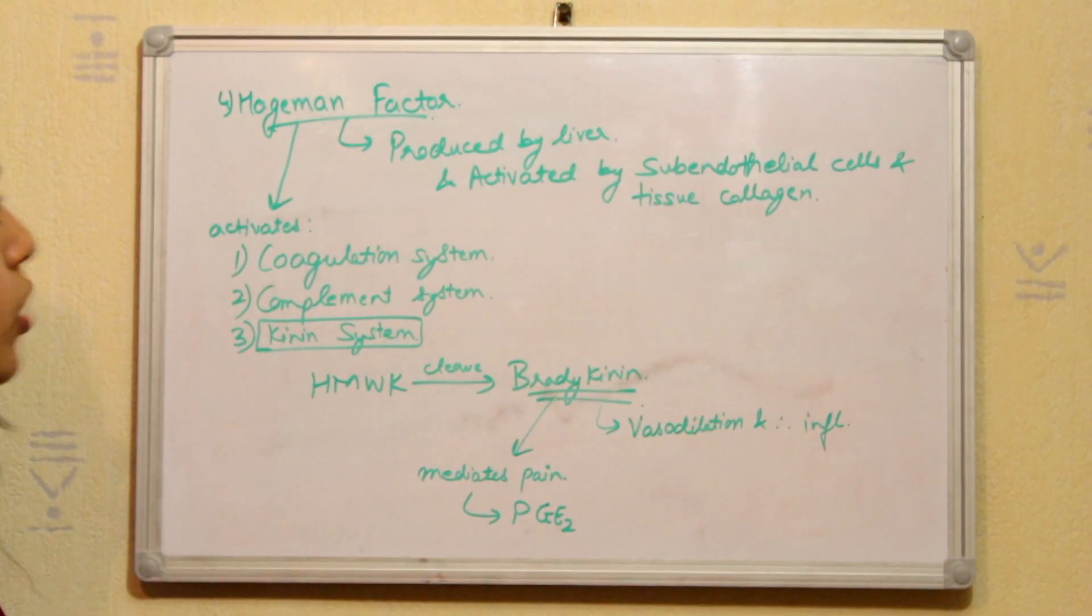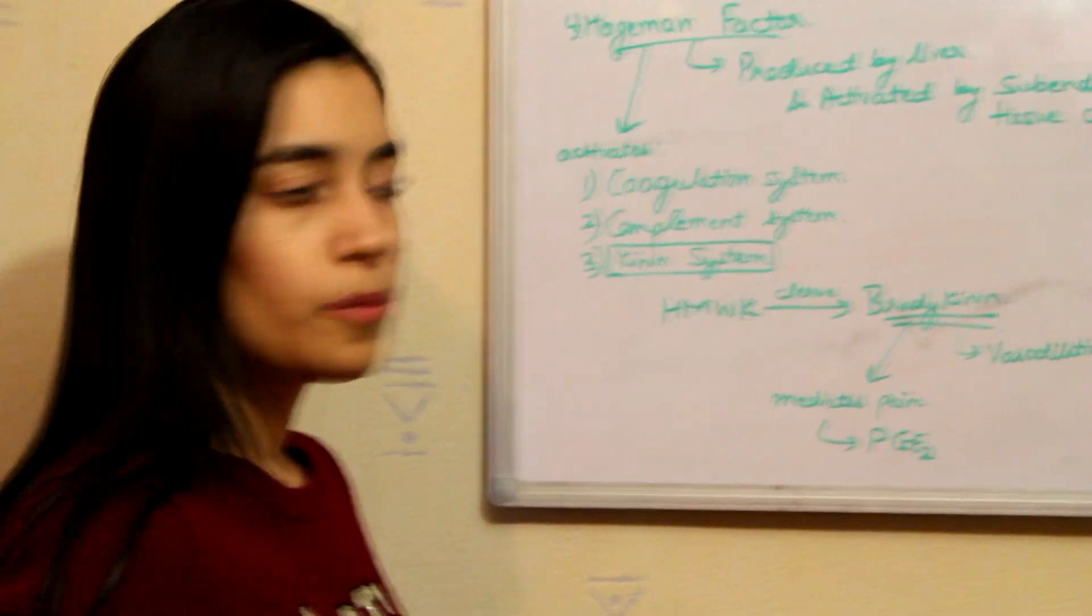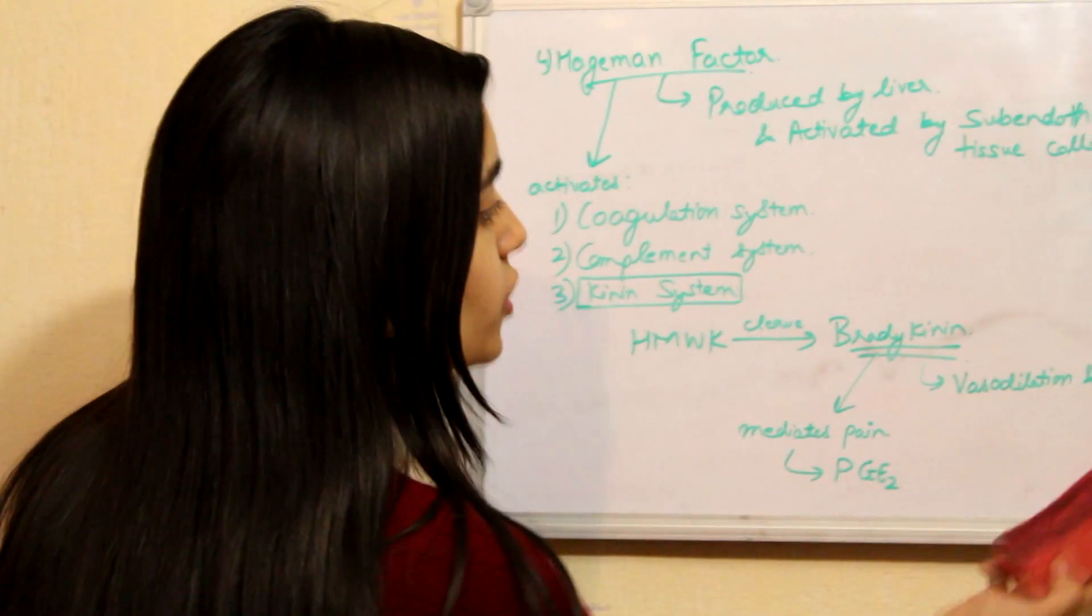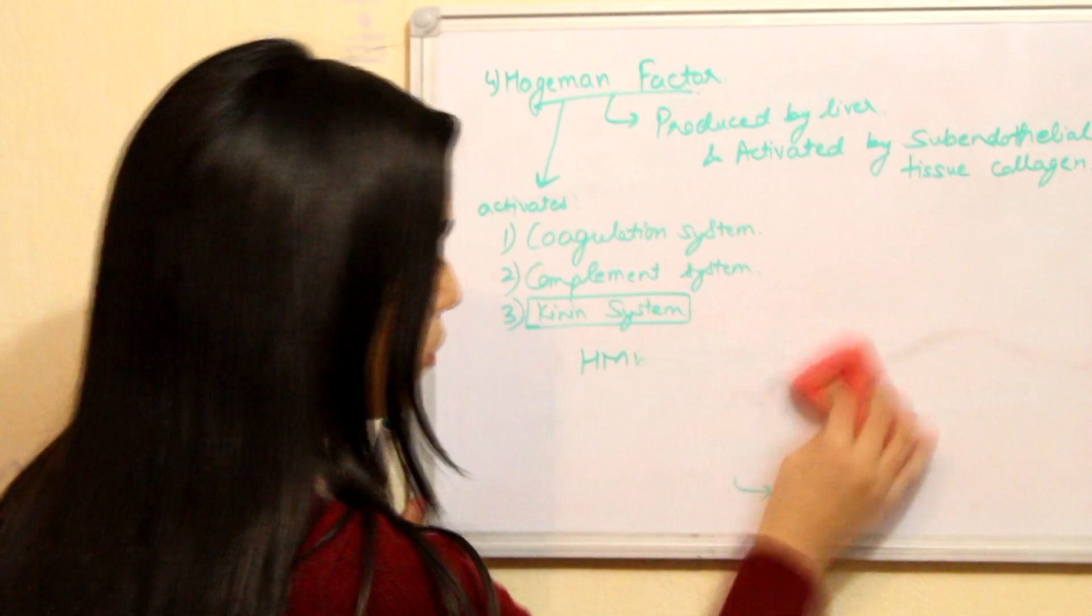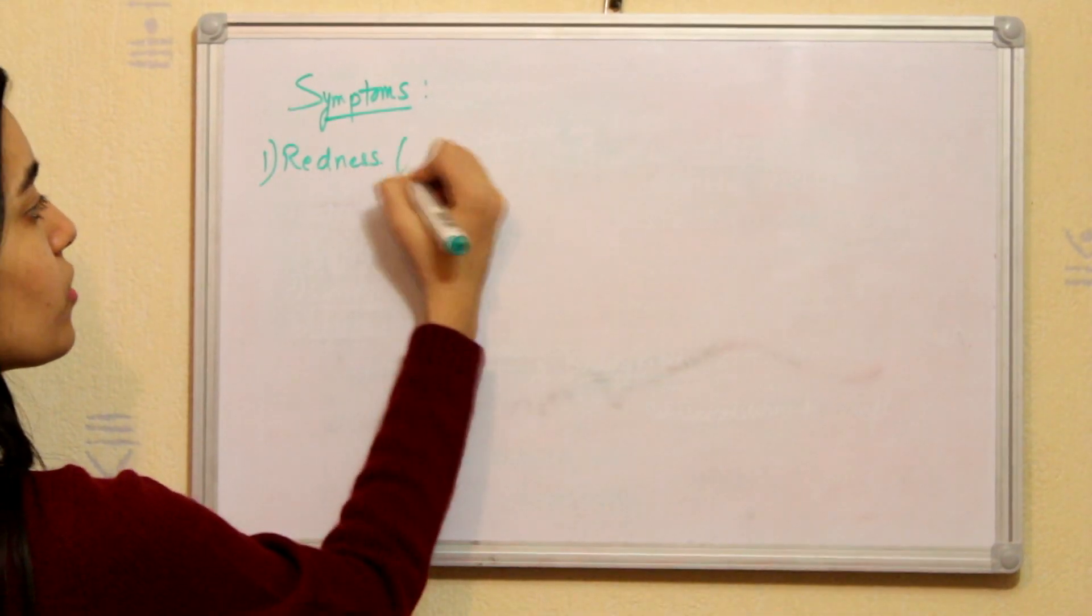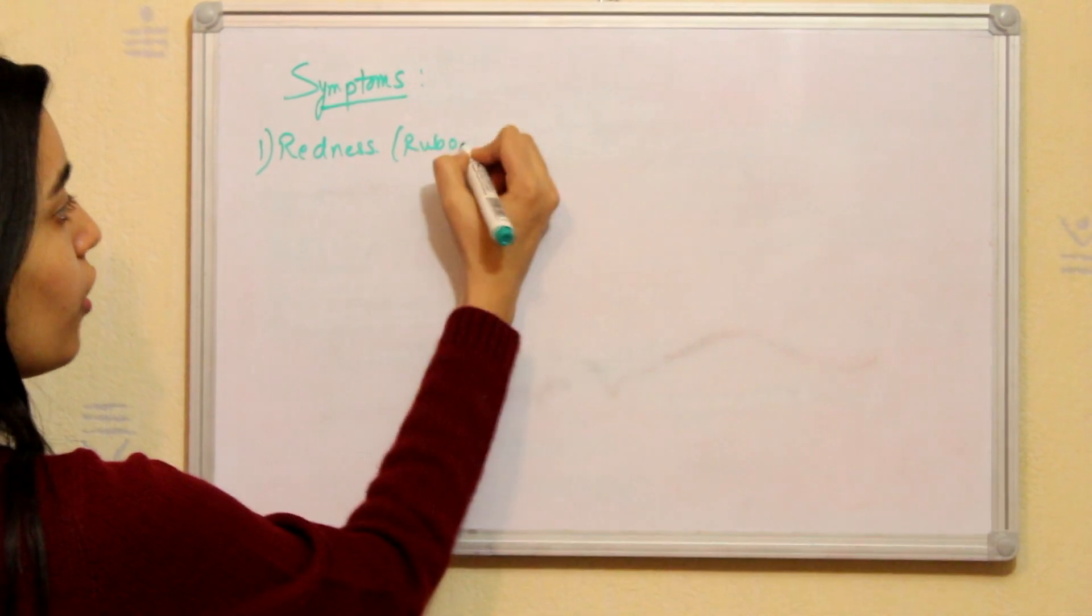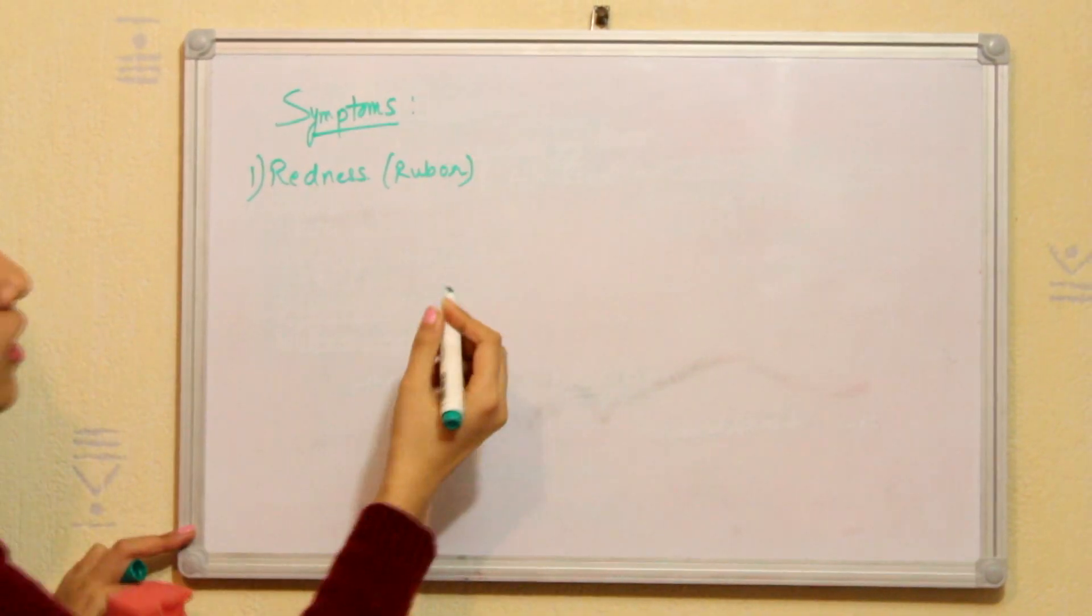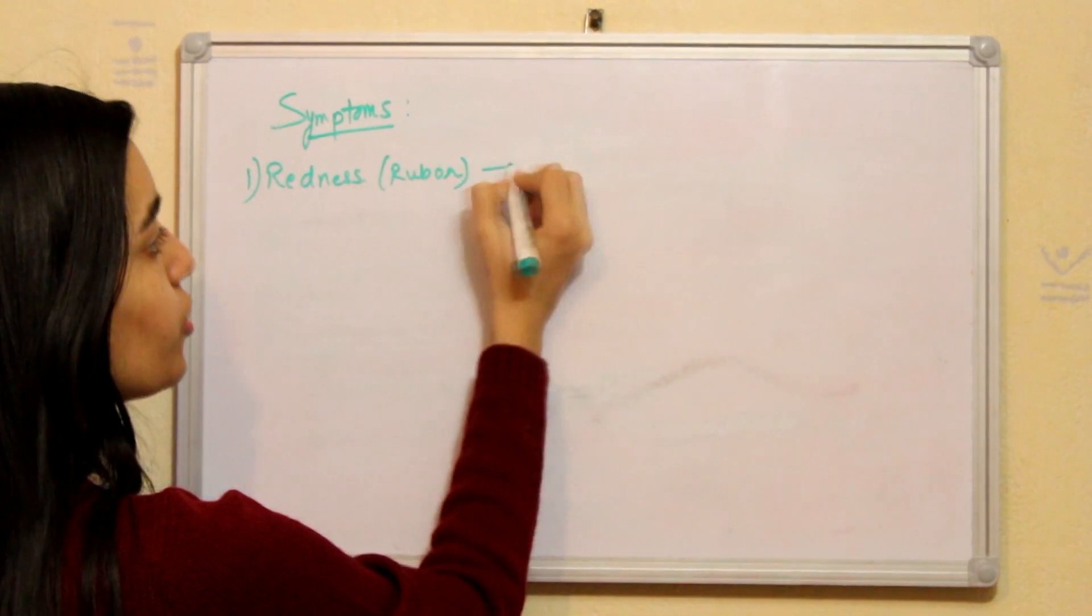So this was all about the factors which mediate acute inflammation. Now we will discuss the general symptoms of acute inflammation. So the symptoms are redness which is called rubor. And it is due to vasodilation.